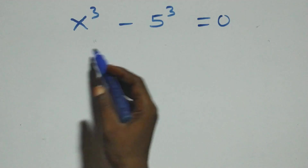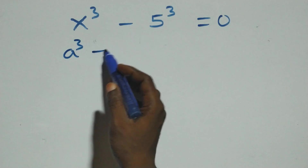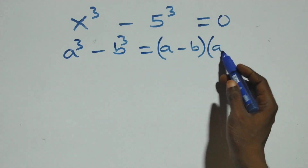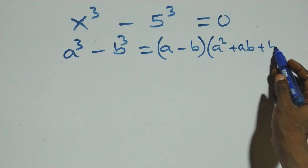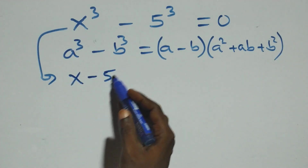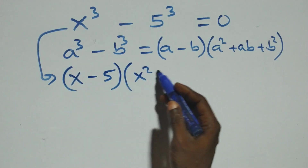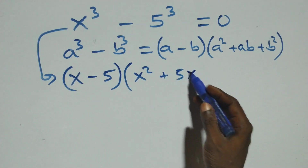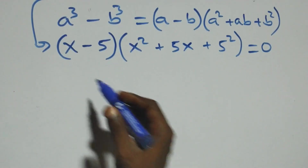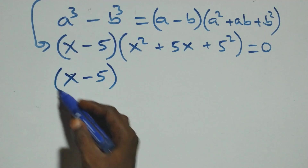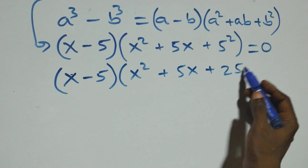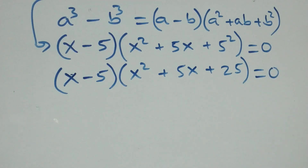Solving from the second case, this follows from the difference of cubes identity: a³ − b³ equals (a − b)(a² + ab + b²). All we have becomes (x − 5)(x² + 5x + 5²), that is (x − 5)(x² + 5x + 25) equals zero.